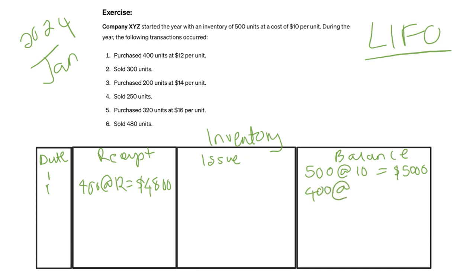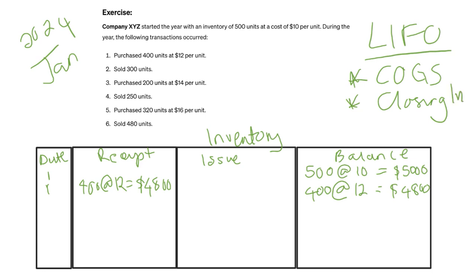So we now have 400 units at $12 worth $4,800, and also 500 units at $10. This is how our inventory is valued, which will help us calculate our cost of goods sold and closing balance. On January 2nd, we sold 300 units. Since we have two prices, we need to determine at what price to issue the goods when selling.